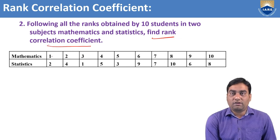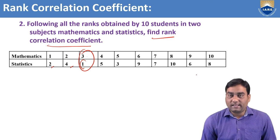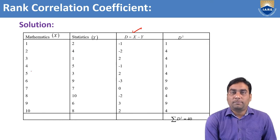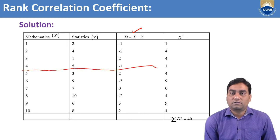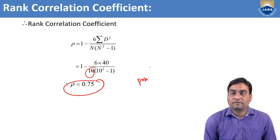So 10 students are there. Rankings are 1 to 10 in mathematics. The same persons in statistics have ranks: second, fourth, first... for example, one person got third rank in mathematics and first rank in statistics. We find d equal to x minus y, the difference between mathematics and statistics ranks. Sigma d square equals 40 and number of observations are 10. Simplifying, we get the rho value, which indicates a positive relation.